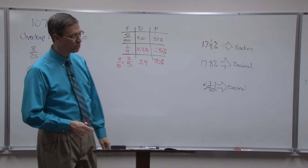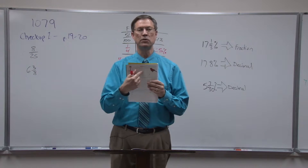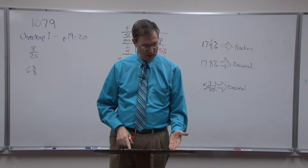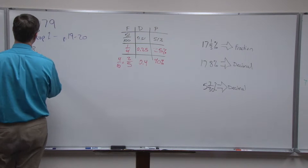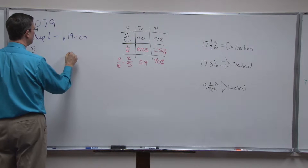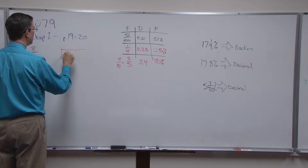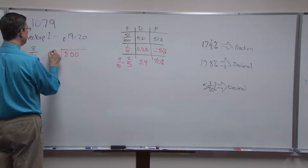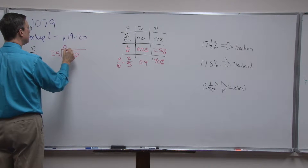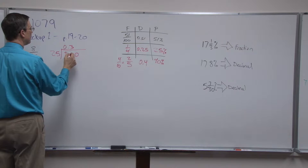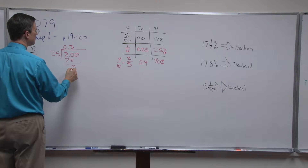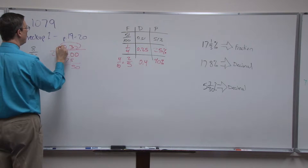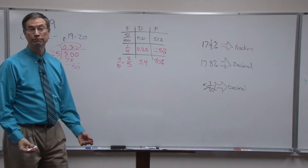Let's look at a problem similar to what's on the checkup: change fractions into decimals. Here's 8 divided by 25. Put the 8 under the doghouse, tack on zeros, divide by 25, put the decimal above. Three times 25 is 75, subtract; 25 goes into 50 twice. The answer is 0.32.